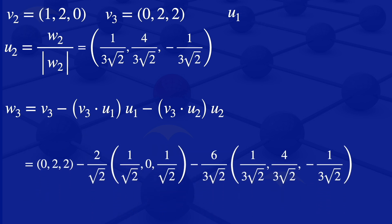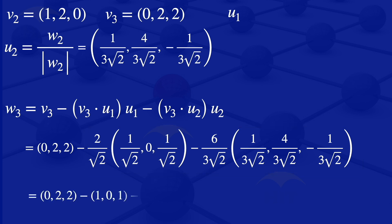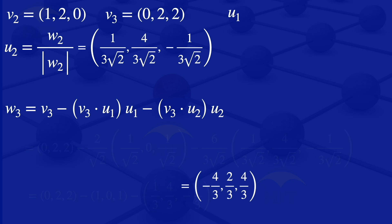Multiplying out 2 over root 2 times U1 gives the vector 1, 0, 1, and multiplying 6 over 3 root 2 times U2 gives 1 over 3, 4 over 3, minus 1 over 3. Subtracting from 0, 2, 2, we get 0 minus 1 minus 1 over 3 equals minus 4 over 3, and the other elements give 2 over 3 and 4 over 3. So W3 equals minus 4 over 3, 2 over 3, 4 over 3.